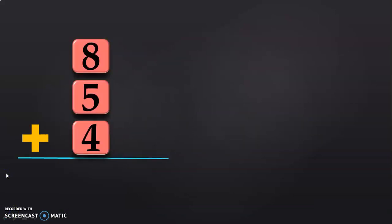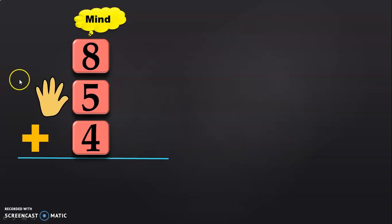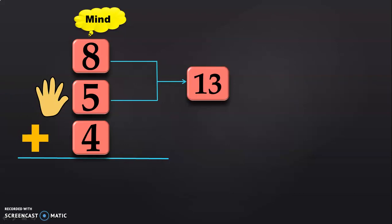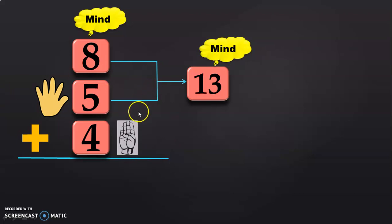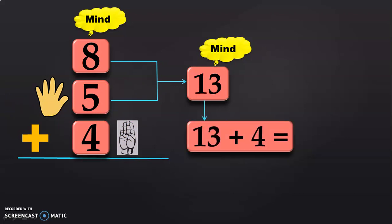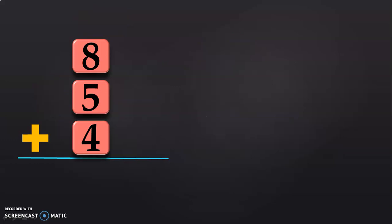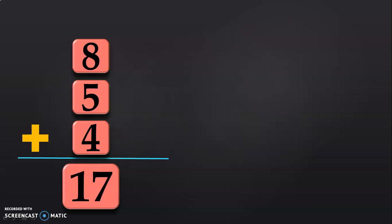Here, we have to add 8 plus 5 plus 4. Have 8 in the mind and 5 in the fingers. After 8, count 9, 10, 11, 12, 13. So, 8 plus 5 will give you the answer 13. Now, you have to add 13 plus 4. Have 13 in the mind and 4 in the fingers. After 13, count 14, 15, 16, 17. So, 13 plus 4 will give you the answer 17. The sum of the three numbers 8 plus 5 plus 4 will give you the answer 17.